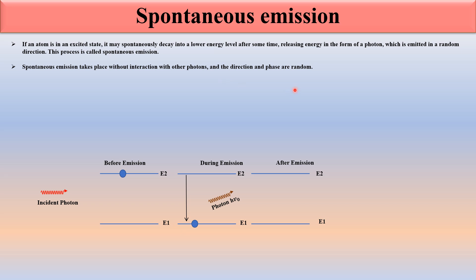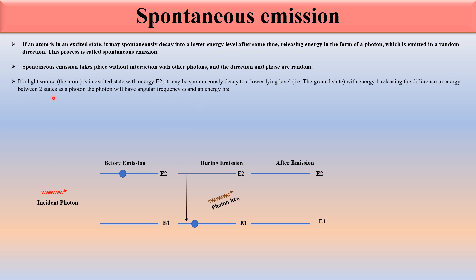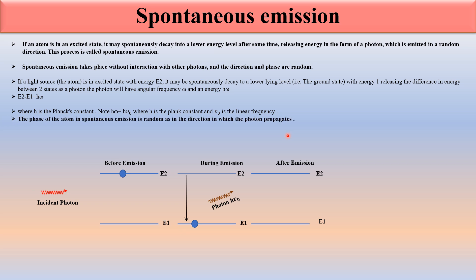Spontaneous emission takes place without interaction with other photons, and the direction and phase are random. If a light source is in the excited state with energy E2, it may spontaneously decay to a lower energy level with energy E1, releasing the difference E2 minus E1, where h-nu equals h times v-naught, h being Planck's constant and v-naught being the linear frequency. The phase and direction of the emitted photon are random.